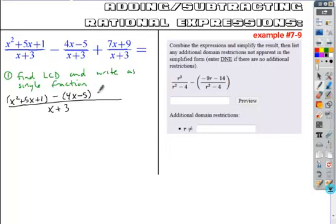Plus the next fraction's numerator, 7x plus 9, times any LCD factor missing from that fraction's denominator. Once again, nothing missing. Notice I put grouping symbols around each of the fraction's numerators. Not a bad idea to do that.